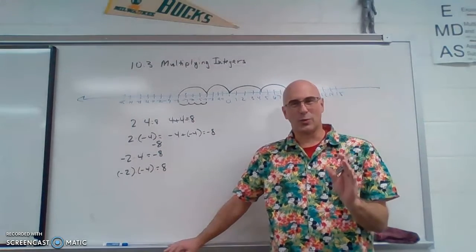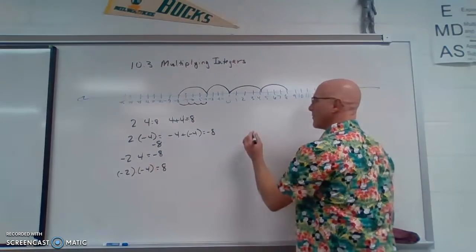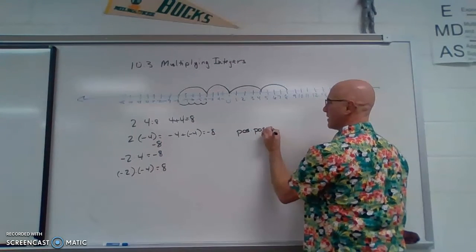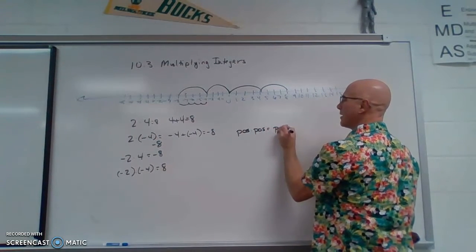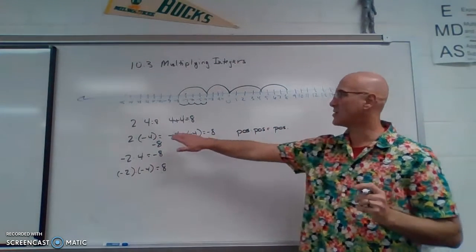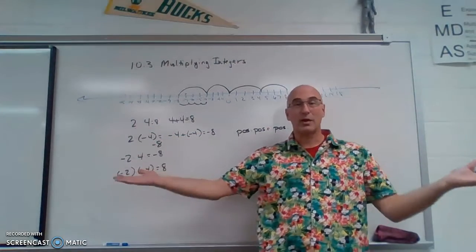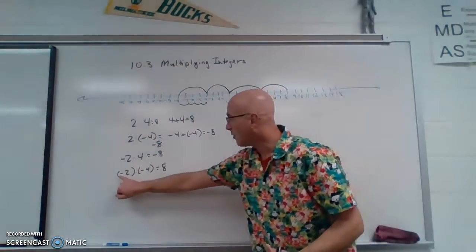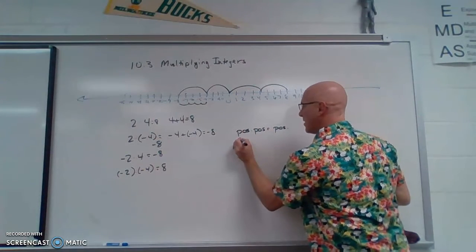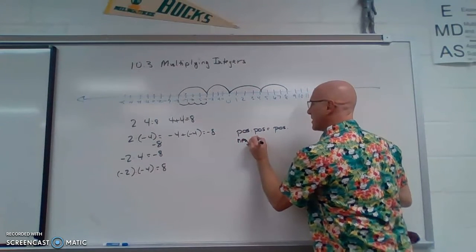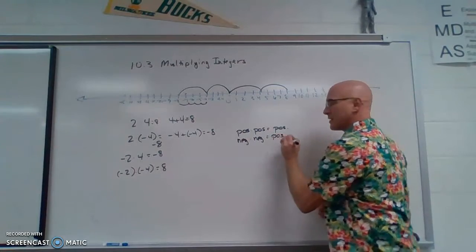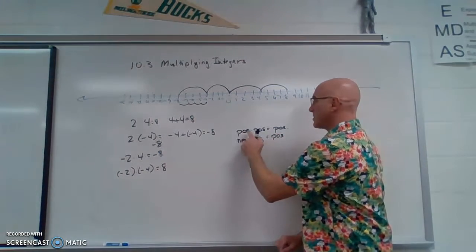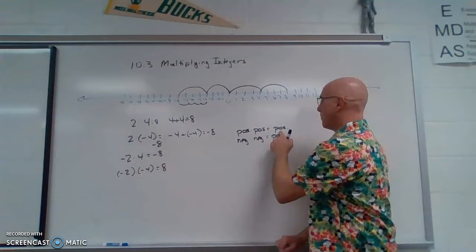Now here are the rules. If you are multiplying a positive times a positive, we are going to get a positive number. That is what you learned back in 3rd grade because all we knew was positive numbers. If we multiply a negative times a negative, we get a positive number. So same sign, positive answer.